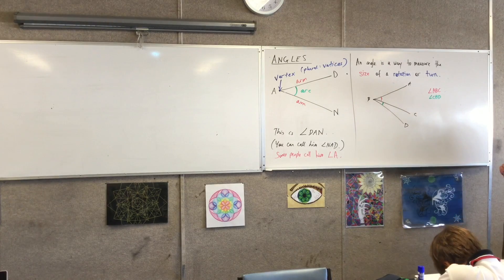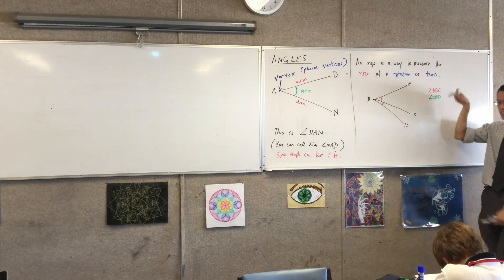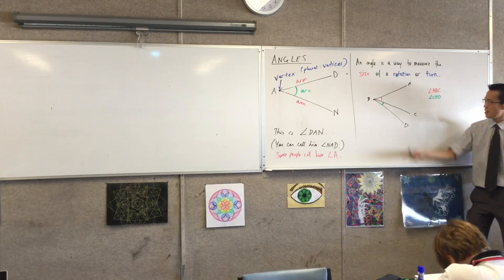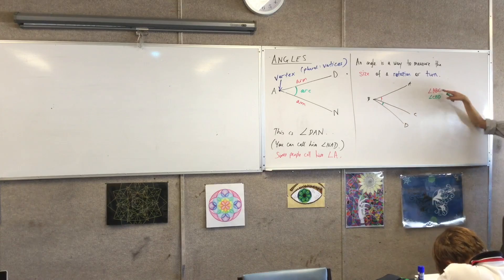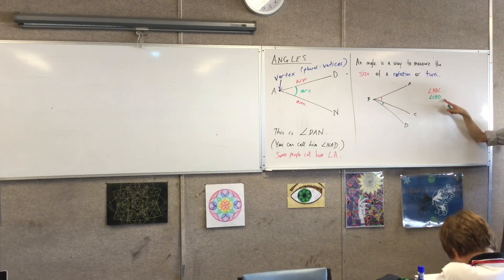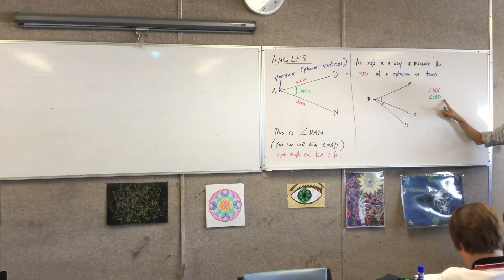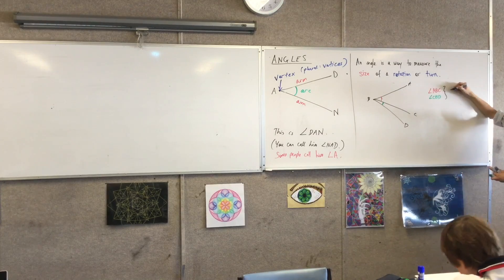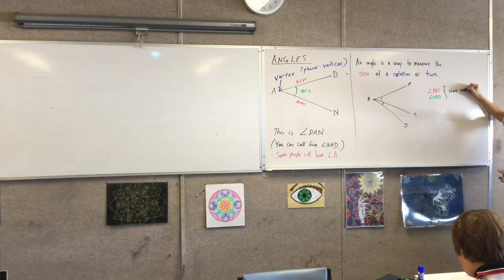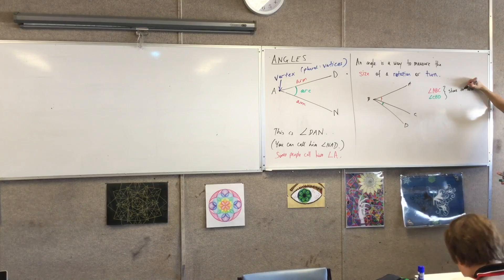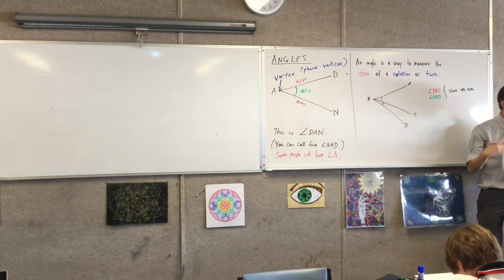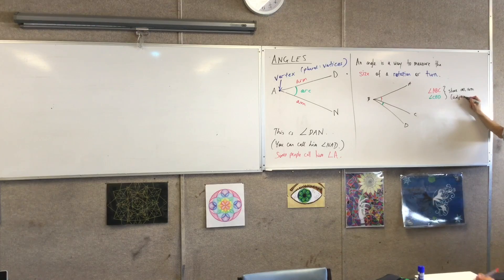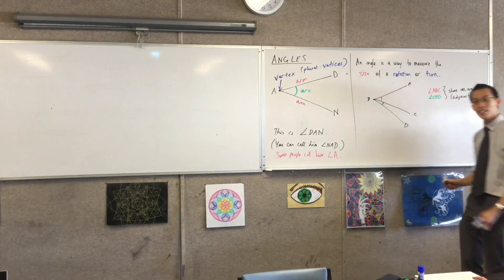The thing I want to point out about these two, is that do you notice that they share an arm? Do you see that? Do you see how B, C is an arm of this angle? And it's an arm of that angle. Does that make sense? So, therefore, since these angles share an arm, we call them adjacent angles. They're next to each other, right?